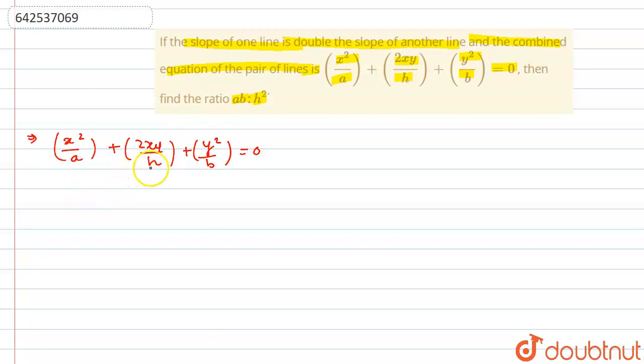We are told that in this combined equation containing lines L1 and L2, the slope of one line is double the slope of the other line.